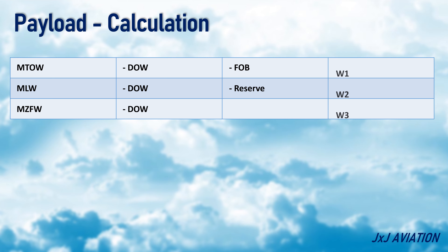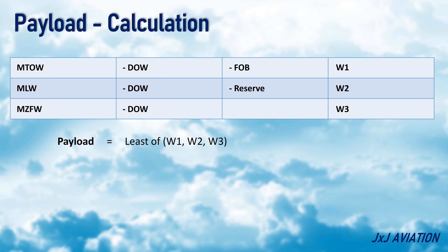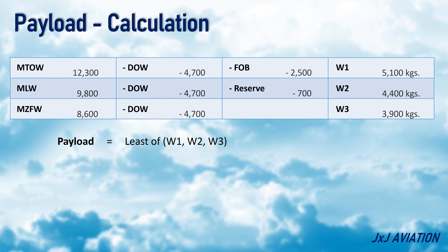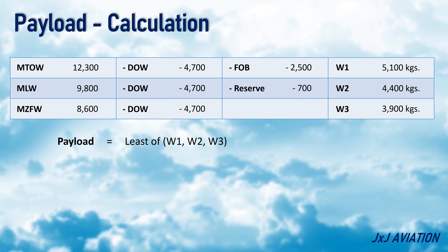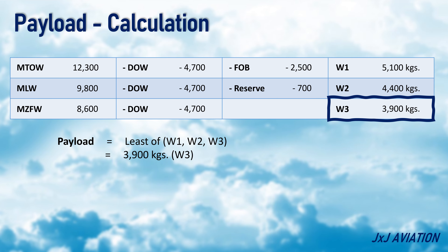Once we finish doing the calculations, we will get W1, W2 and W3. The least of these three weights is to be considered as the maximum payload which you can uplift in your aircraft. Now let us fill in some numeric values into this table, which will make it much easier for you to understand. With these figures filled in, we understand that the maximum payload which we can carry in this aircraft is 3900 kilograms. Note that these figures are just representative and are not specific to any particular aircraft's regulatory weights.